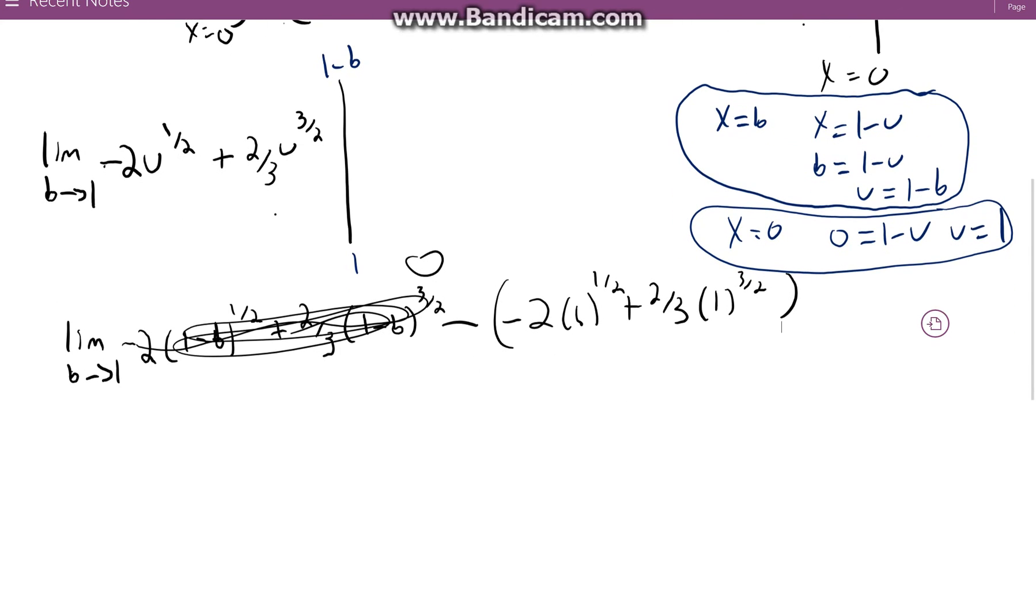And that would just become 2 to the 1 half, which is actually just 2, obviously, minus 2 thirds, which is then just equal to 6 over 3 minus 2 over 3, which is equal to 4 thirds. And that is our answer.